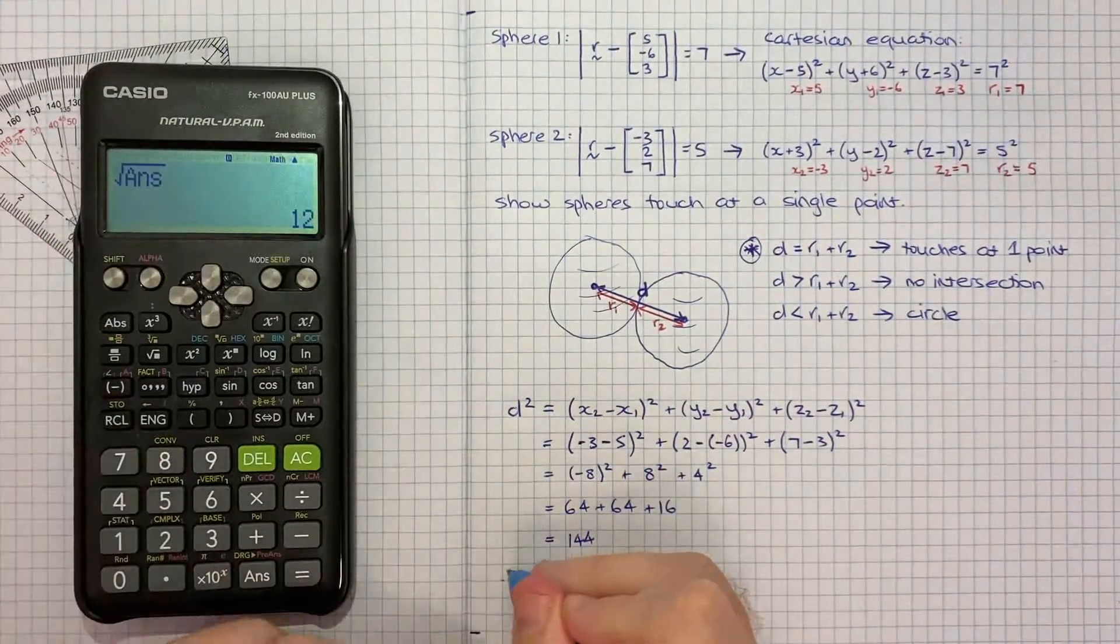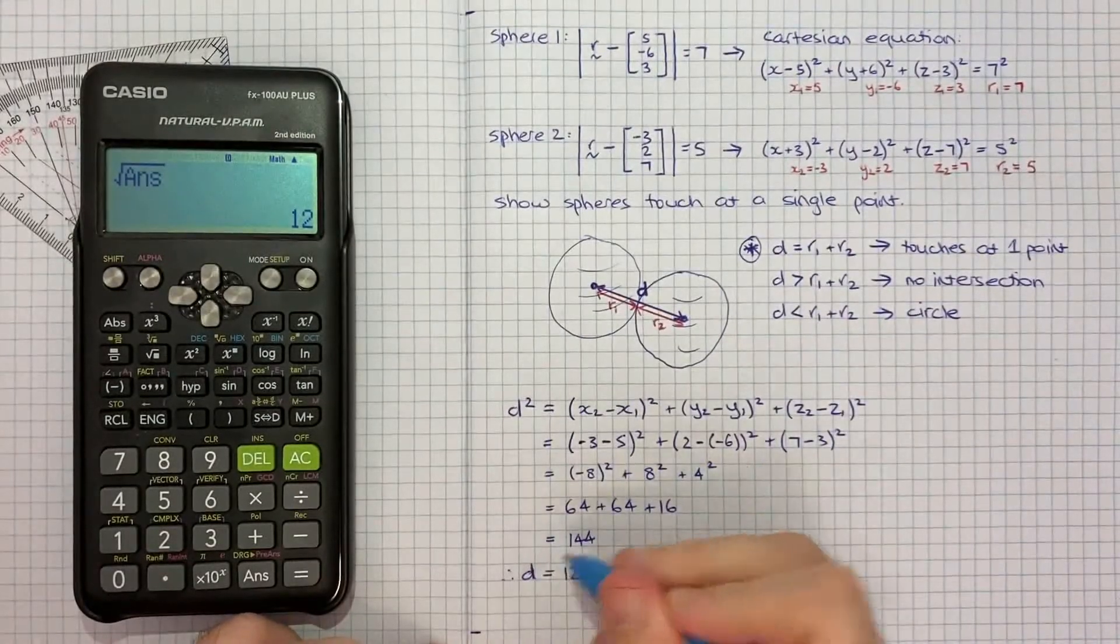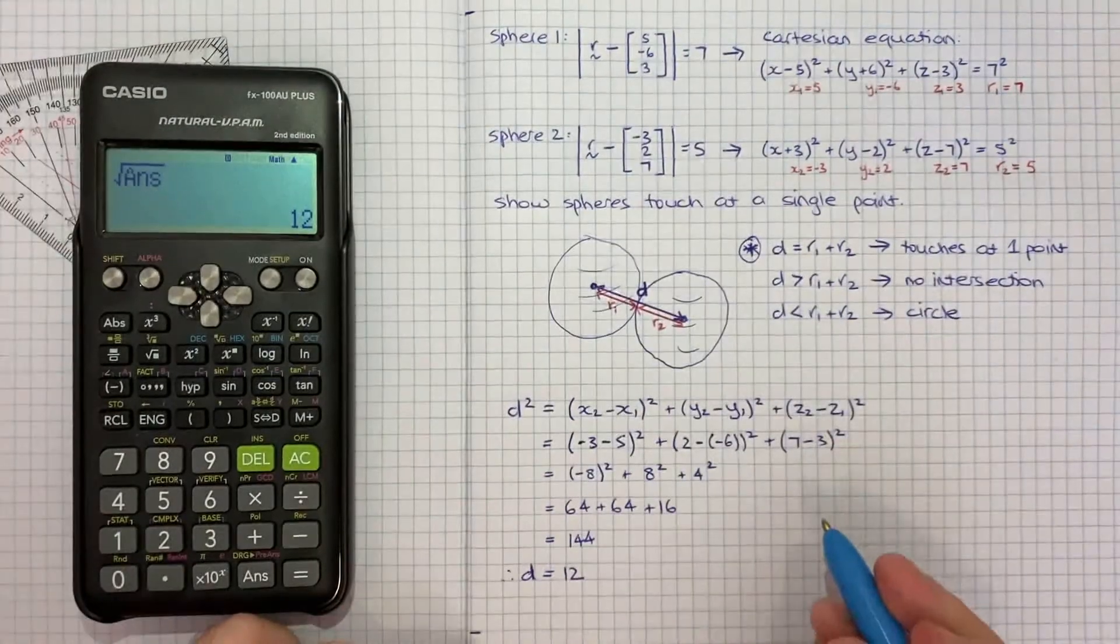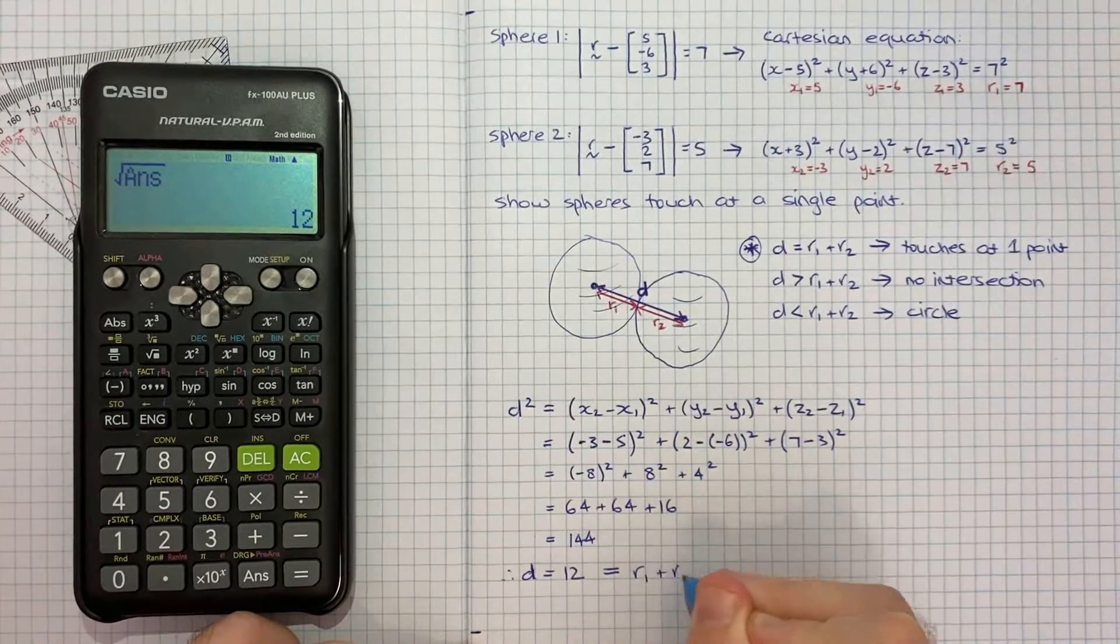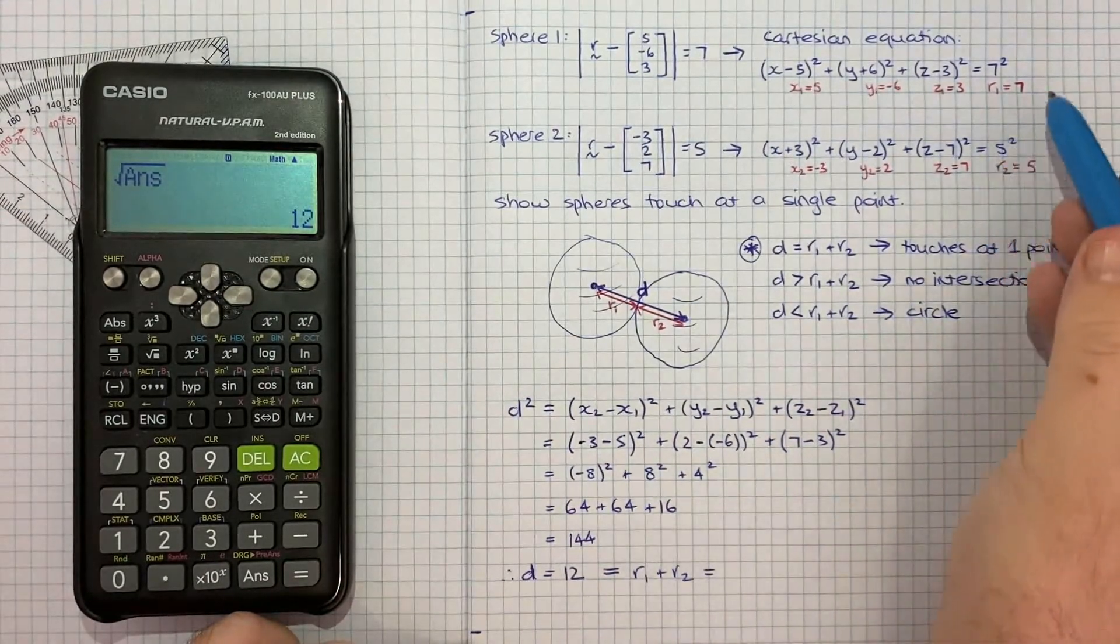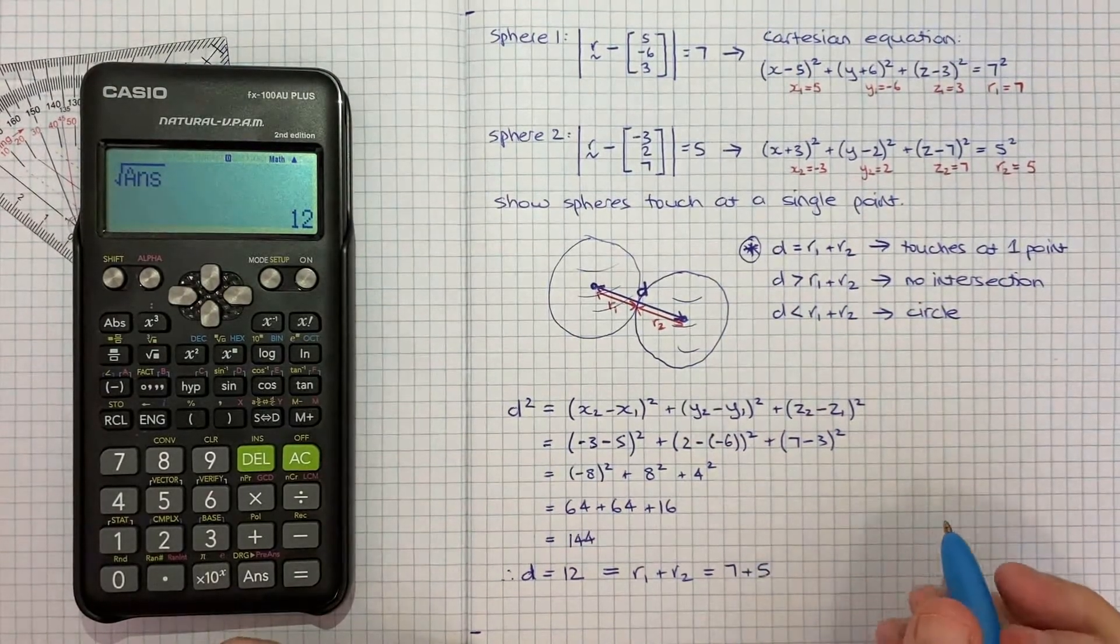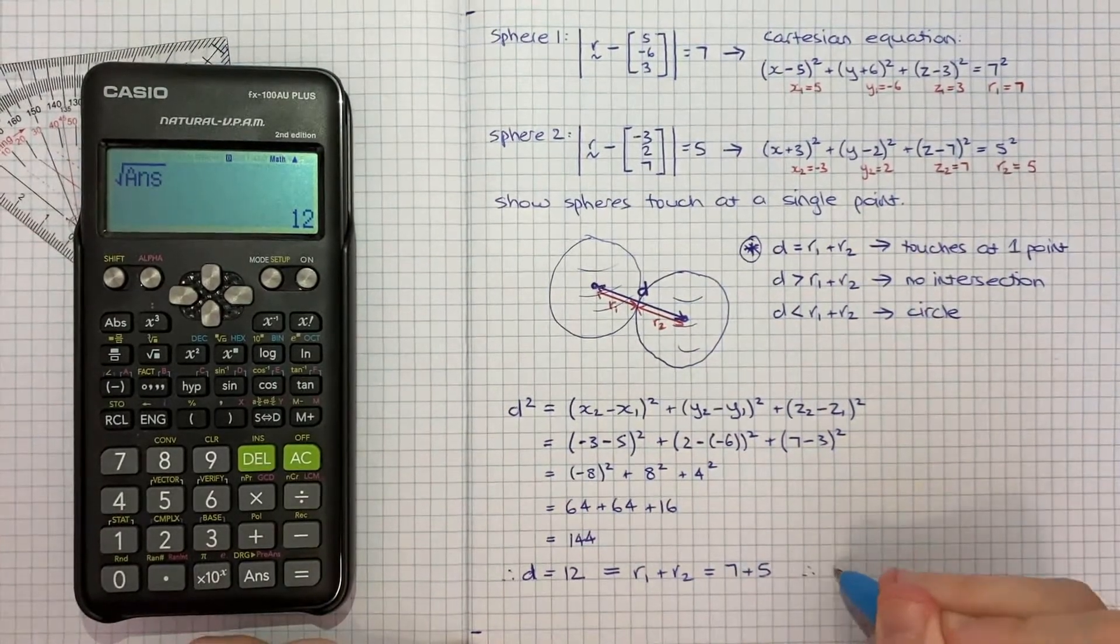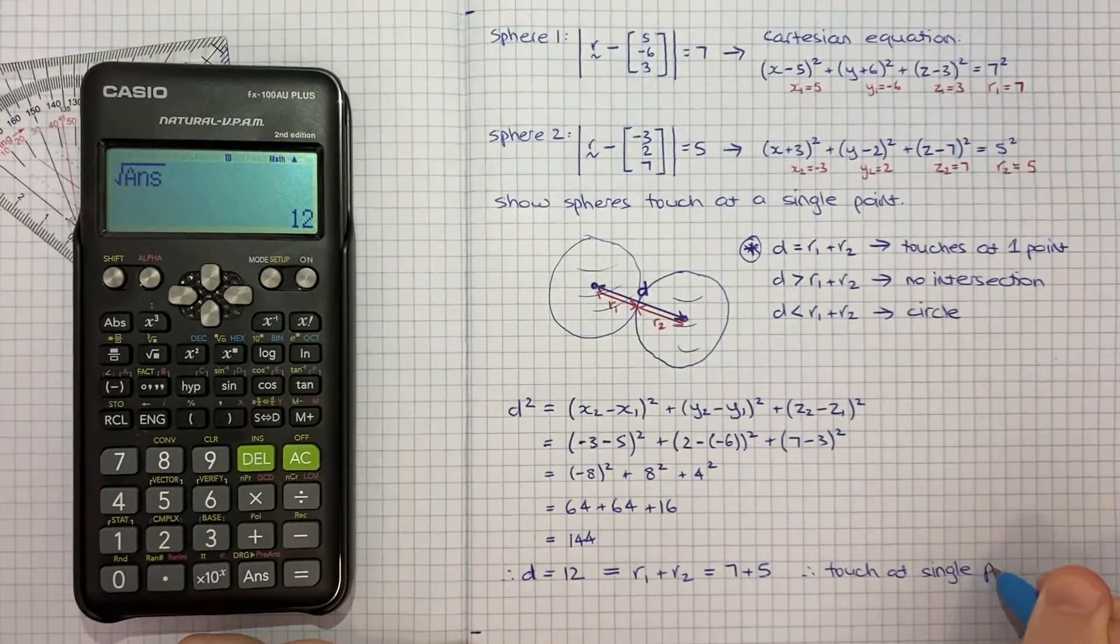Therefore, d equals 12. That's the distance between the two center points. Notice that 12 equals r₁ + r₂, because 7 + 5 is also 12. Therefore, they touch at a single point.